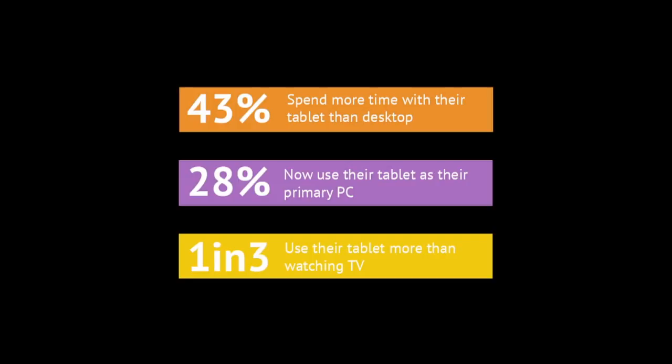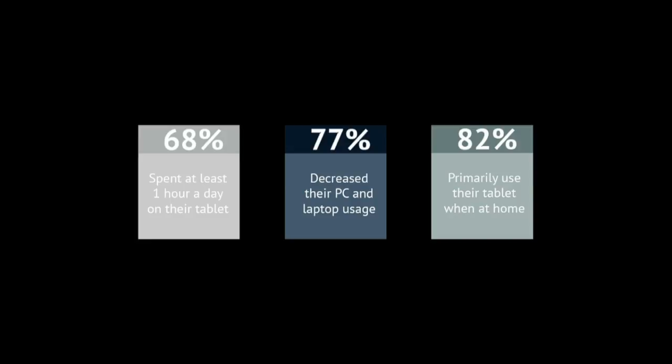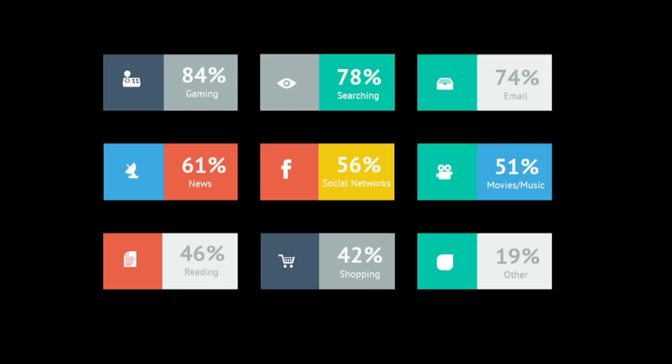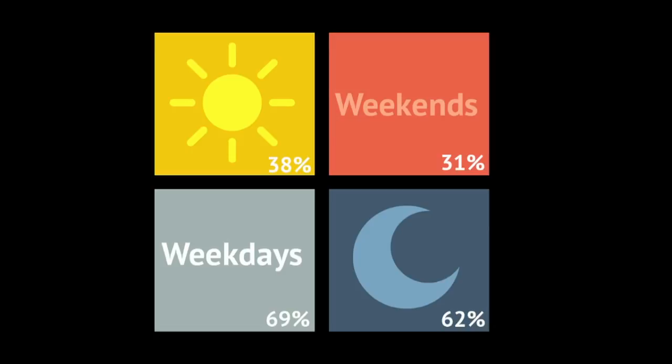People are using them a lot. It's possible that they're replacing television. They are spending less time on desktops now with mobile devices. They're using them all over the place — social networking, gaming, email, movies, and shopping. And they're using them all the time: on the weekends, weekdays, at night, in the mornings.